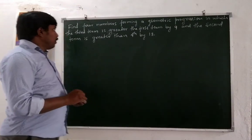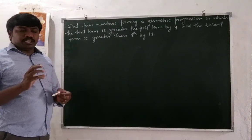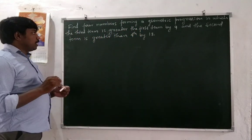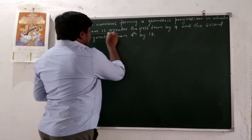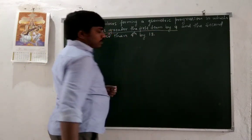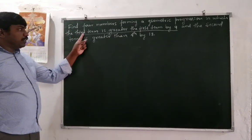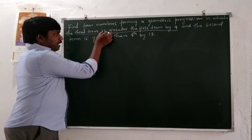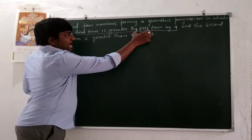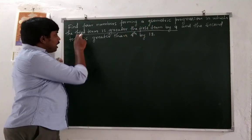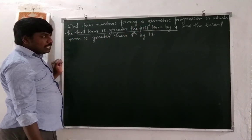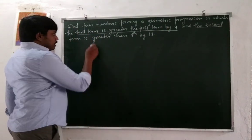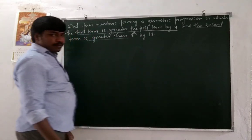Next problem: find four numbers forming a geometric progression. We need to calculate four terms of a geometric progression in which the third term is greater than the first term by nine, meaning T3 = T1 + 9. The second term is greater than the fourth term by 18.